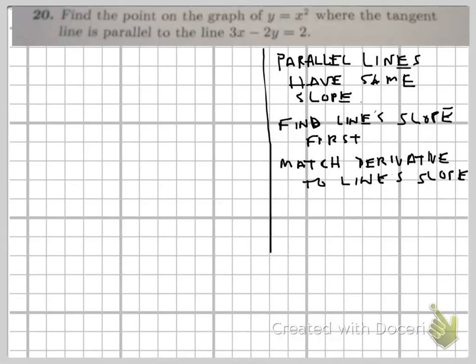Okay, so this is a little more complicated. The question is finding a point on the graph of y equals x squared where the tangent line is parallel to a given line. The tangent line has a slope that's equal to the derivative.